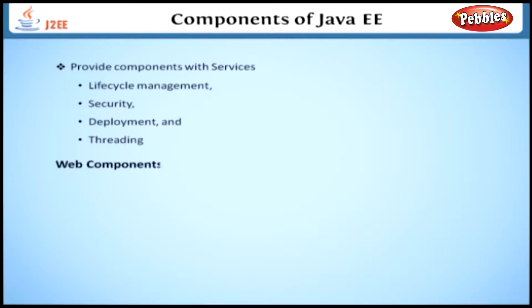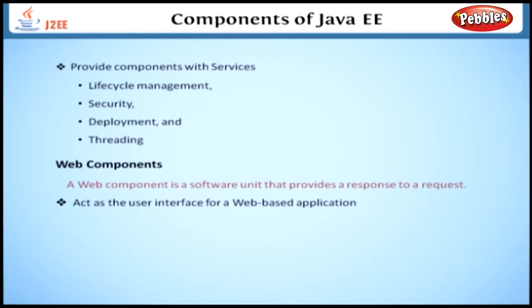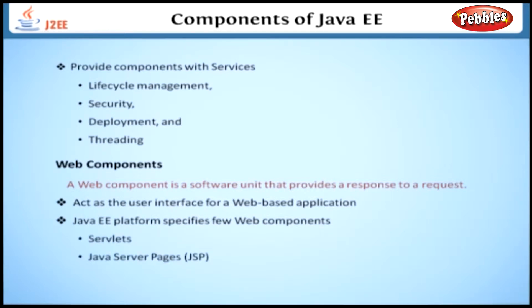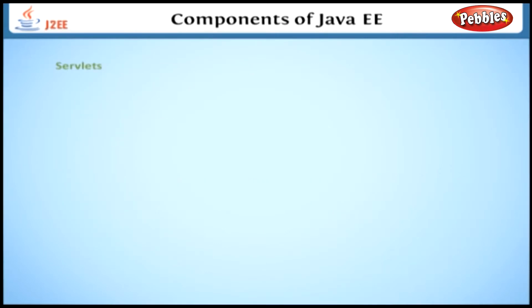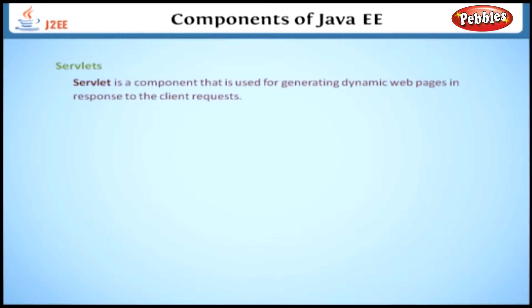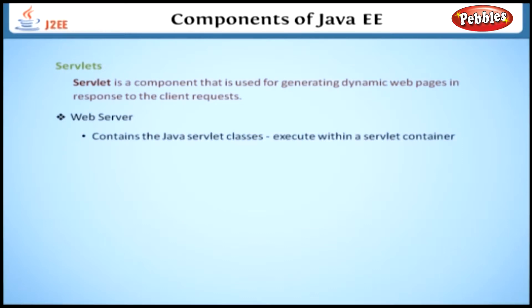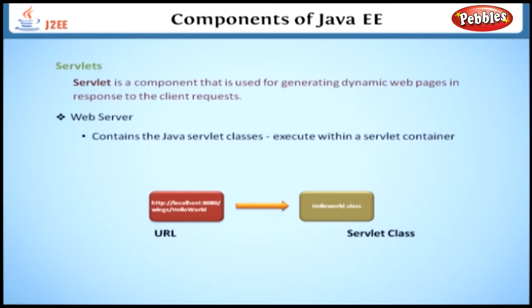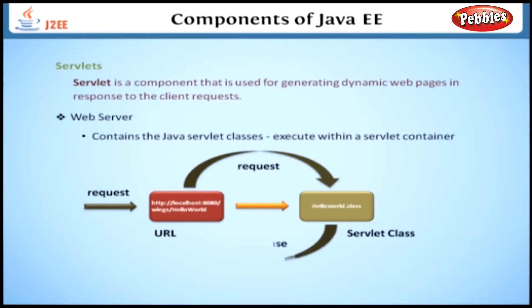Let's start with Web Components. A Web Component is a software unit that provides a response to a request. Usually it will act as the user interface for a web-based application. The Java EE platform specifies a few Web Components: Servlets and Java Server Pages. A Servlet is a component that is used for generating dynamic web pages in response to client requests. A web server contains the Java Servlet classes that execute within a Servlet container. The web server will also map a particular URL to a Servlet. Whenever a request comes to this URL, it invokes the particular Servlet, processes the request, and sends back the response.